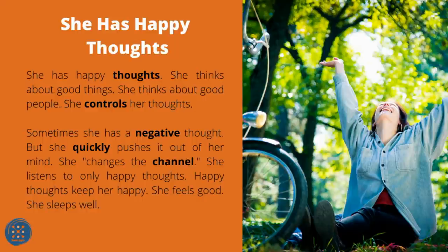She Has Happy Thoughts. She has happy thoughts. She thinks about good things and good people. She controls her thoughts. Sometimes she has a negative thought, but she quickly pushes it out of her mind. She changes the channel and listens to only happy thoughts. Happy thoughts keep her happy. She feels good. She sleeps well.